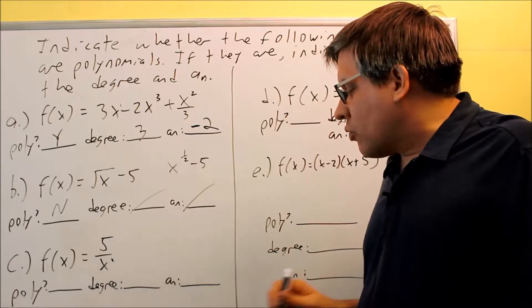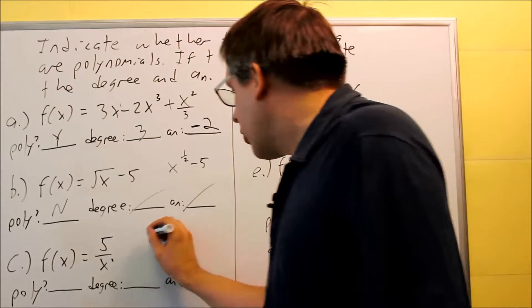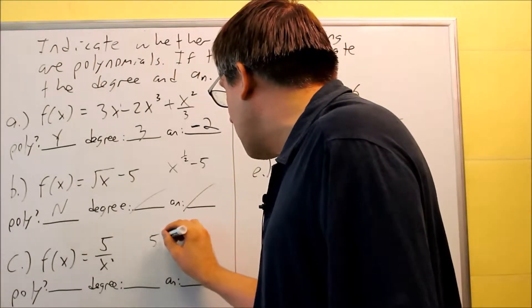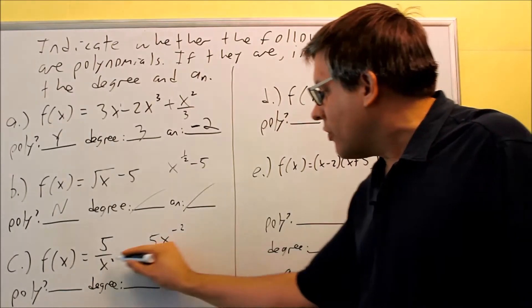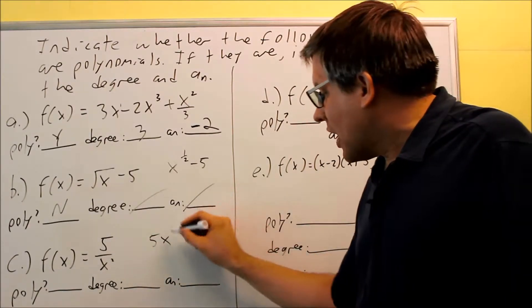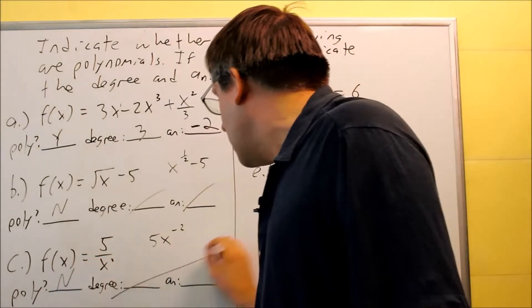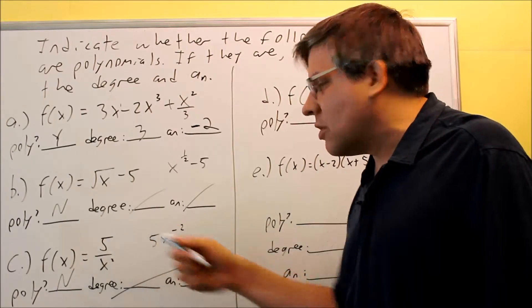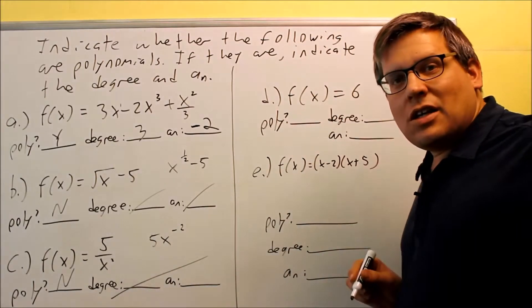Okay, now this one. I have 5 over x squared, so it certainly looks like the square is going to be positive. However, remember that if you have an x on the bottom, it actually is a type of negative exponent. We can move the x up, and that's going to become negative. And so because I have a negative power there, this one's not considered a polynomial either. We can just cross that out. Again, we can't do that unless it is a polynomial.